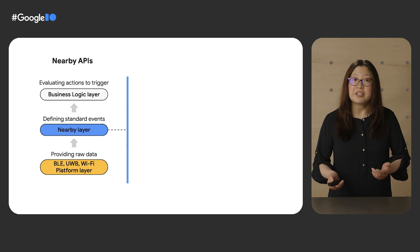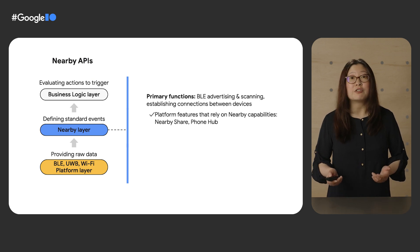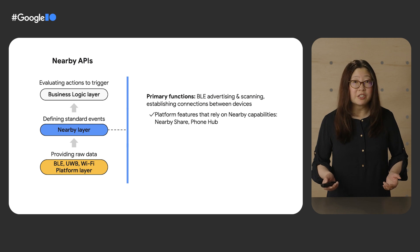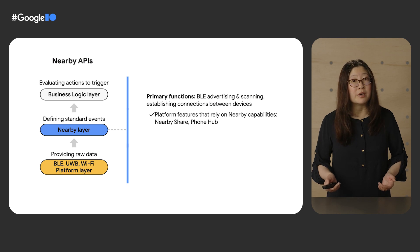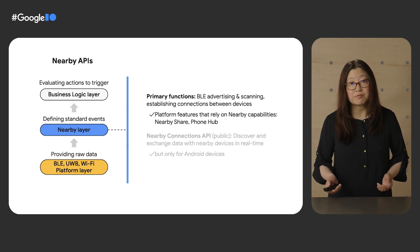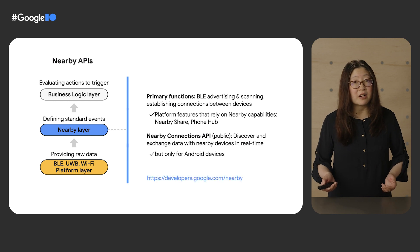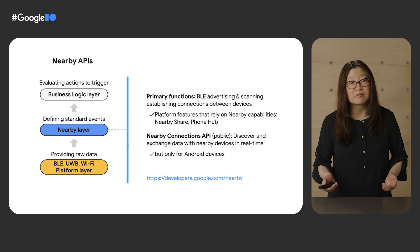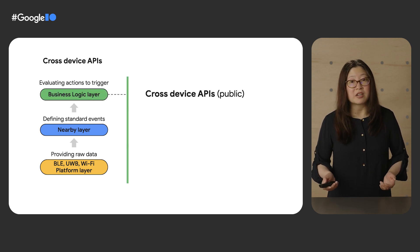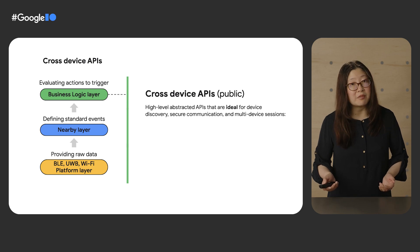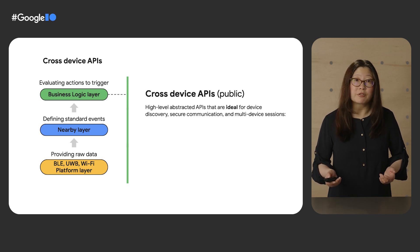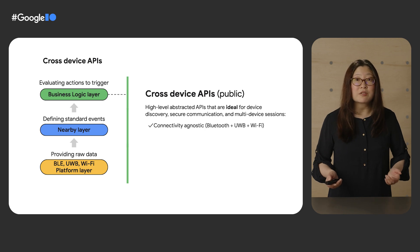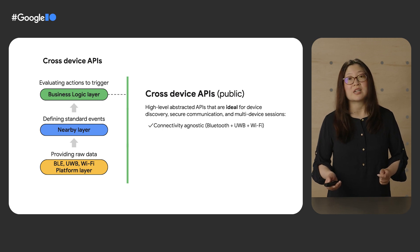In the middle is our nearby layer. The primary functions of our nearby layer are to do Bluetooth advertising and scanning, and to establish connections between devices. Certain platform features, like Nearby Share and Phone Hub, rely on our nearby capabilities today. We do have our existing Nearby Connections API, but a big limitation to that API is that it only works on Android devices. At the top of the stack is our new business logic layer, where we will have high-level abstracted APIs that are ideal for building cross-device experiences. These APIs will abstract away the underlying connectivity technologies, so that you don't have to worry about what capabilities a user's device has.